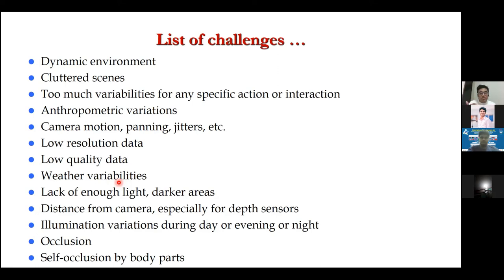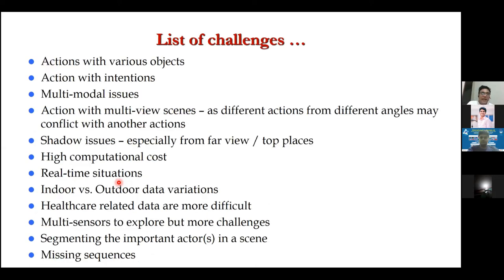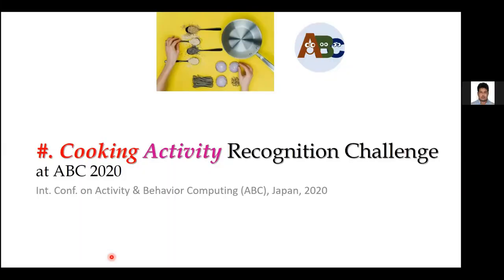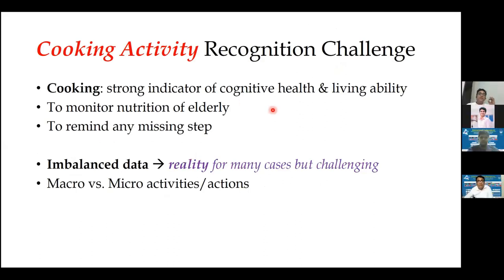The next generation — or you yourselves — can then work to solve one problem at a time based on your study. Actions with various objects or intentions, indoor versus outdoor, healthcare-related, multi-sensor scenarios, and missing sequences are all extremely important. Cooking activity recognition is one example — with a competition held last year at ABC conference. Monitoring cooking activities is important to assess the nutritional quality of elderly people's meals or detect missing steps.